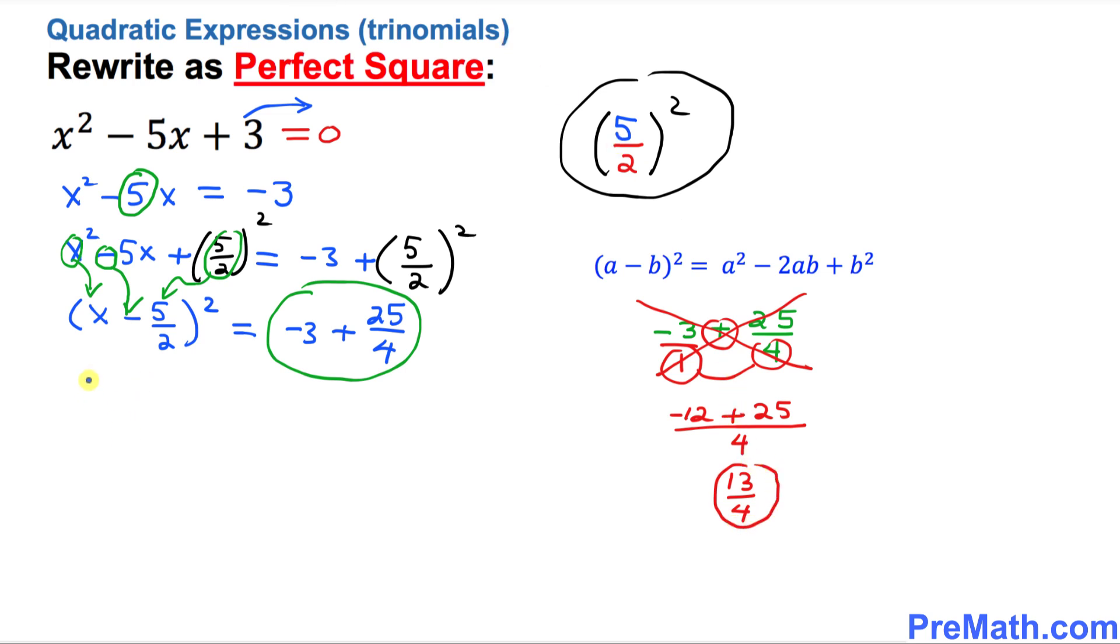So I can write this thing over here. Let's move on over here. x minus 5 over 2 square, and we just simplified this thing. This turns out to be 13 over 4.